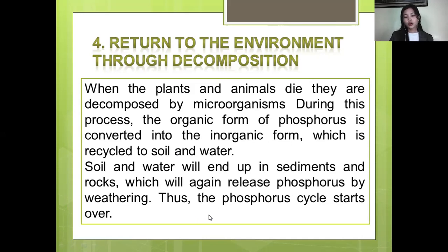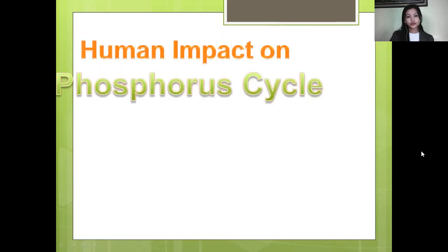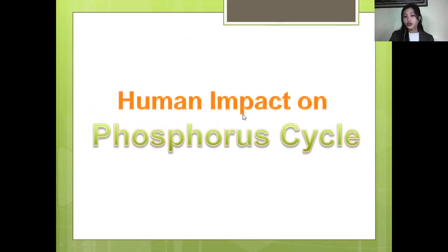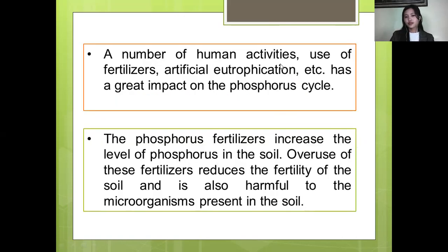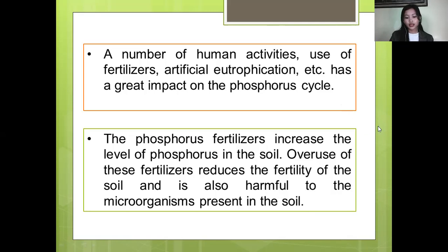Phosphorus is also used in fertilization. There are also human impacts on the phosphorus cycle. A number of human activities include the use of fertilizers and artificial eutrophication. Eutrophication is the excessive richness of nutrients in a lake or other bodies of water, frequently due to runoff from land, which causes a dense growth of plant life and death of animals because of lack of oxygen. This is caused by too much phosphorus coming from the aquatic ecosystem.